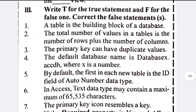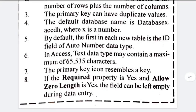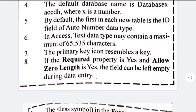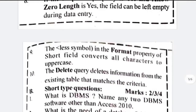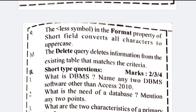True and false section: the primary key can have duplicate values — false. The default database name is database X — true. By default the first name of a new table — true. In Access, text data type may contain — this is false. The primary key icon resembles a key — true. Some questions are from the old book and are not required.